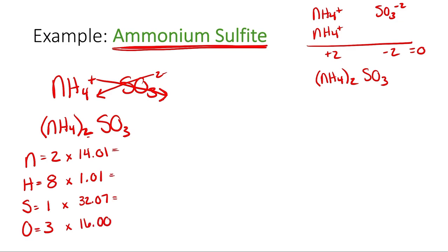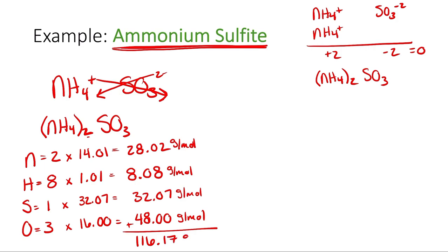Now I'm going to do the math. So this ends up being 28.02, this ends up being 8.08, 32.07, and 48.00, all expressed in grams per mole. These are molar masses. Units are super important. Now I'm going to add all these up together, and I end up with 116.17 grams per mole.